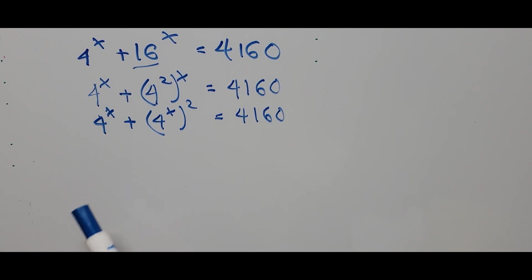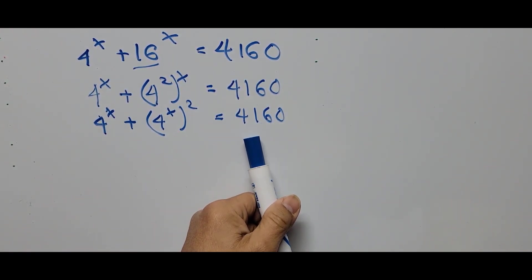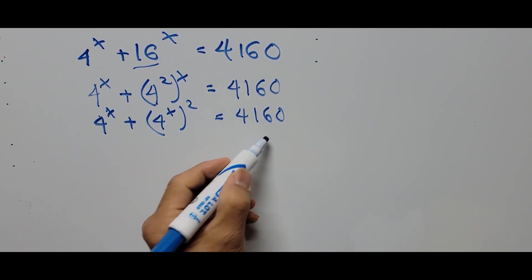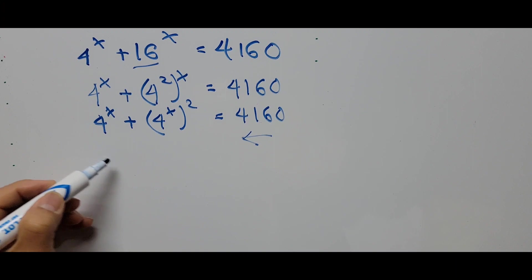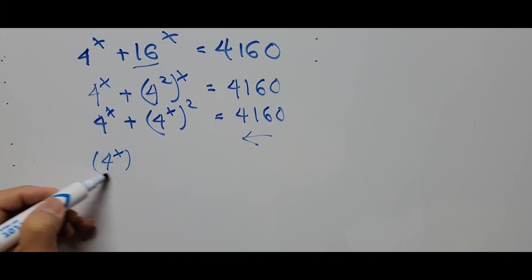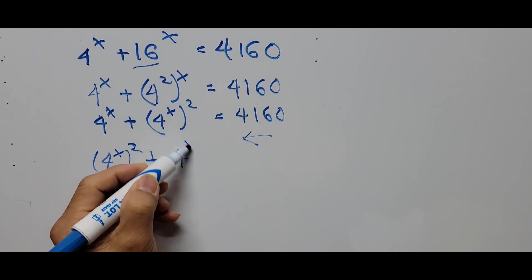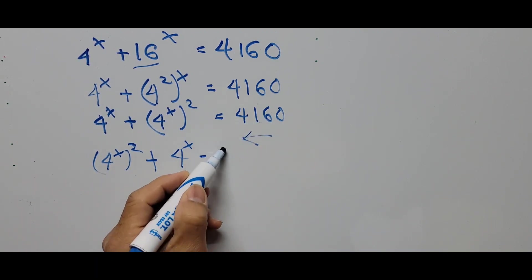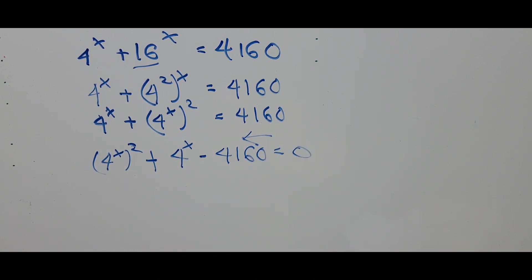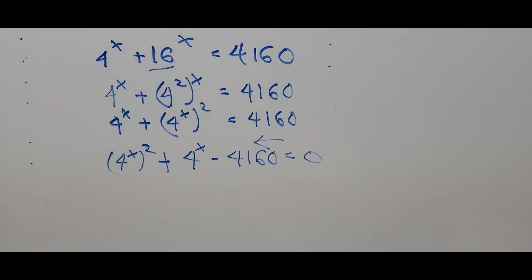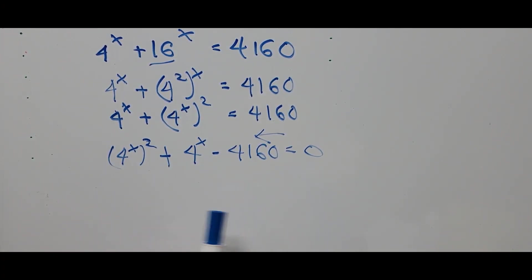From here, arranging the terms of the equation and moving the constant to the left, we now have 4 to the power 2x plus 4 to the power x minus 4160 equals 0. If you notice, this has now been transformed into a quadratic equation since we have the same base.